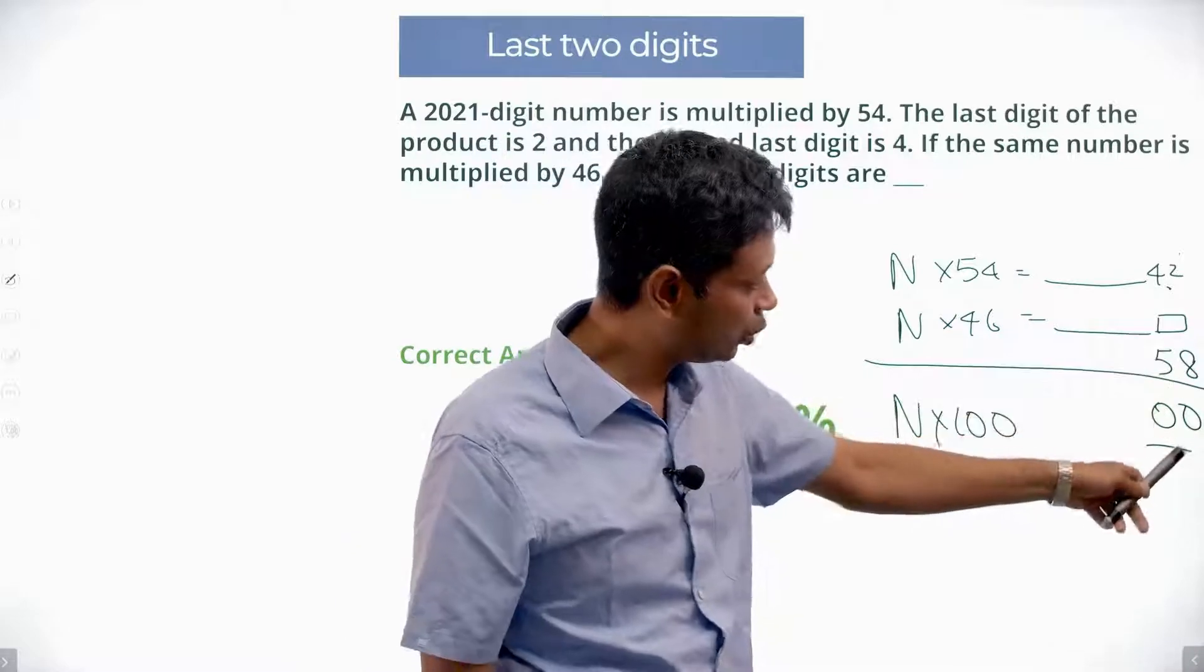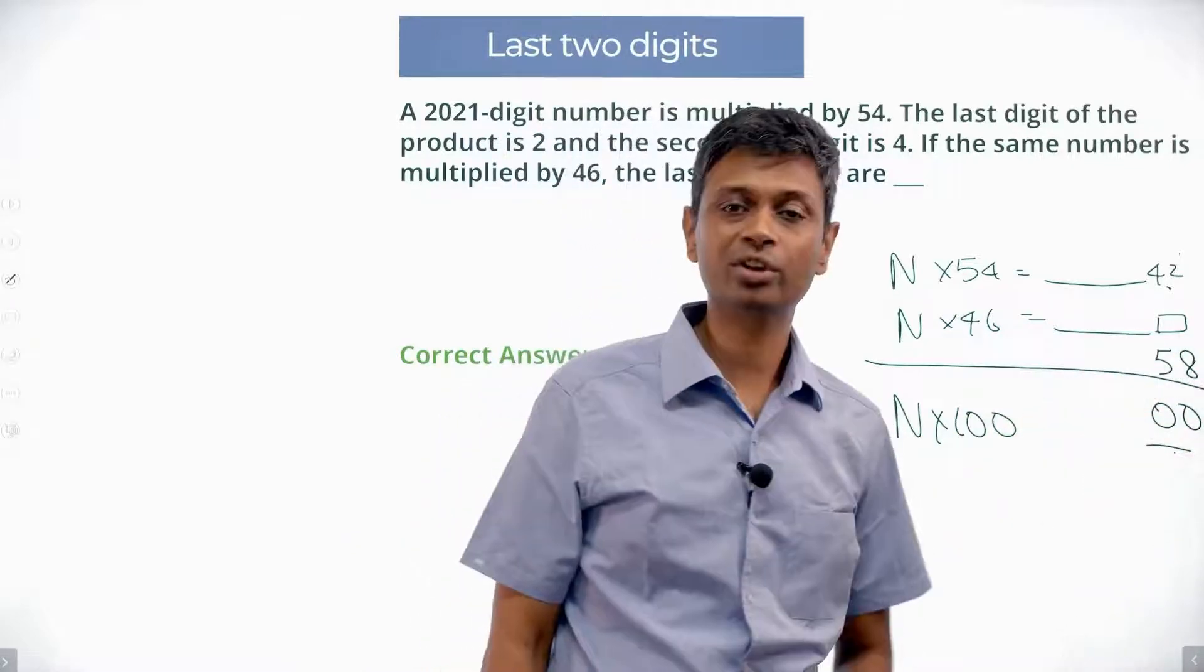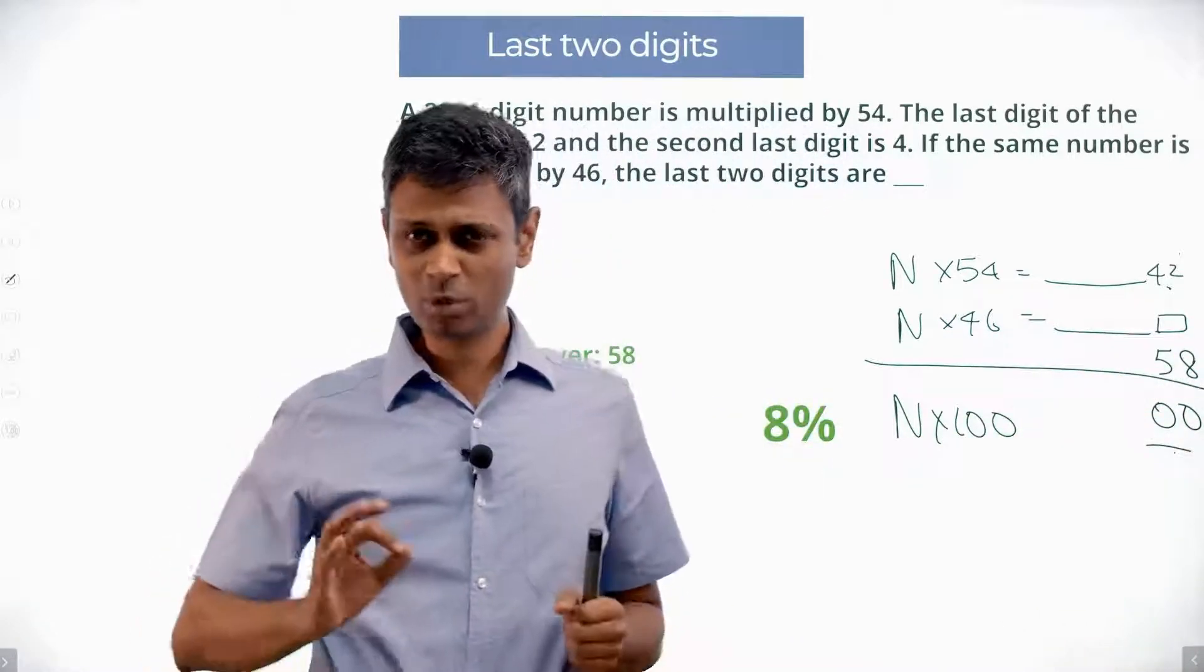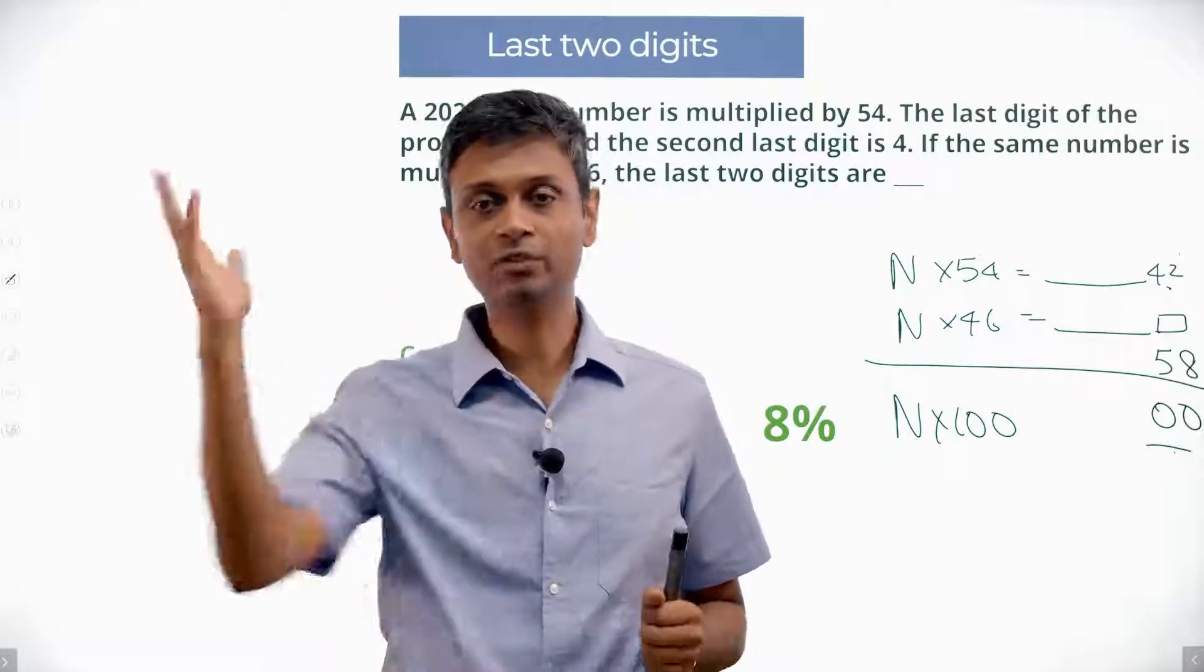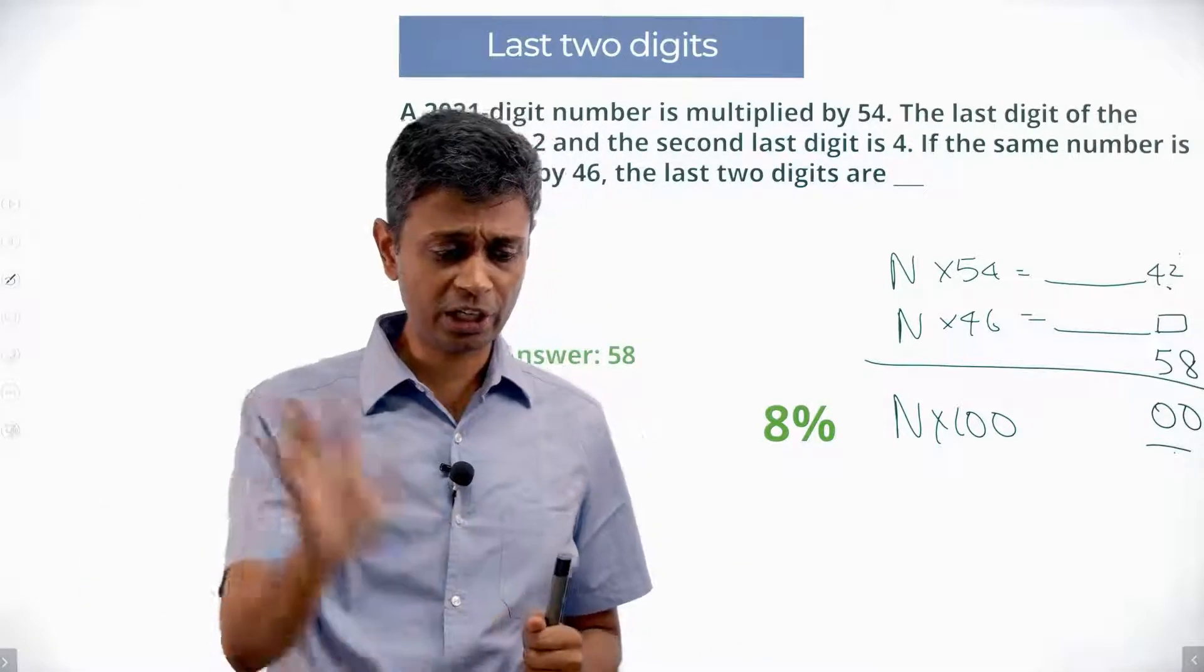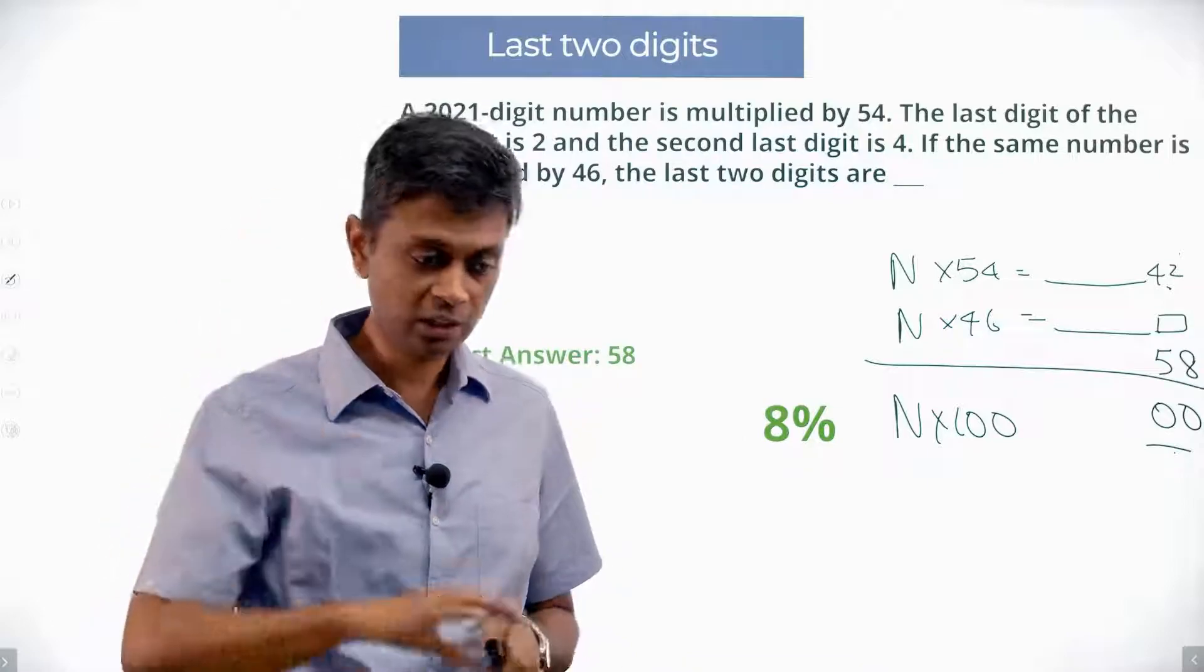This gives 42. If you add these 2, you get 0, 0. The missing part of the jigsaw is 58, 5, 8. 54 plus 46 is 100. You use that idea, you're through. Absolutely delightful question. Beautiful, difficult, but delightful.